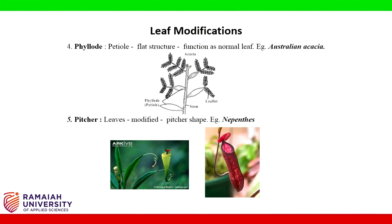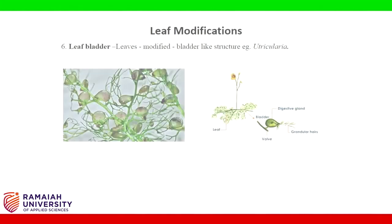Pitcher: leaves are modified into a pitcher shape. Example: Nepenthes. Leaf bladder: leaves are modified into a bladder-like structure. Example: Utricularia.